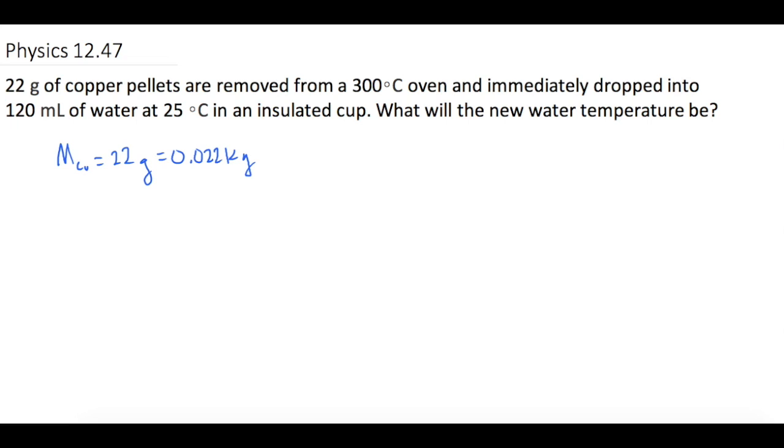They don't tell us, but if we look it up in the book, the specific heat of copper is 385 joules per kilogram times Kelvin. The temperature initially is 300 degrees Celsius for them, and we want to know what the final temperature is going to be for the water.